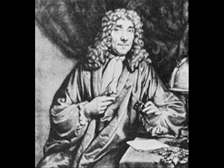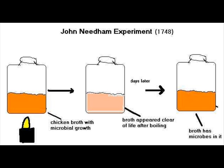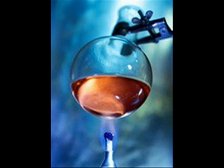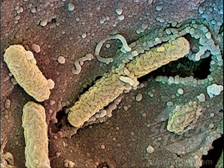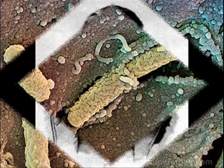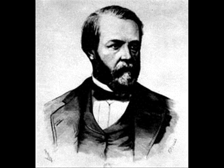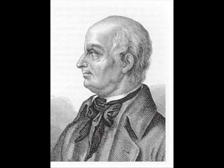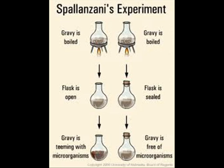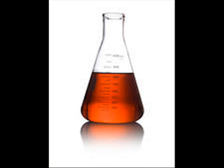Microscopes also seemed to increase support for spontaneous generation, for people could now see many animalcules that appeared out of nowhere. John Needham wanted to see whether the theory remained true. In 1745, he boiled chicken broth, poured it into a flask, sealed it, and waited. Since boiling was known to kill microorganisms, no microbes should arise in the sealed flask. However, since microorganisms did grow in the broth, Needham believed that spontaneous generation was true. An Italian priest, Lazzaro Spallanzani, opposed Needham. Spallanzani suggested that perhaps the microorganisms had entered the broth from the air after the broth was boiled but before it was sealed. He modified Needham's experiment by placing chicken broth in a flask, sealing the flask, drawing off the air to create a partial vacuum, and then boiling the broth. He observed that no microbes grew. The critics argued that Spallanzani had only proven that spontaneous generation could not occur without air.